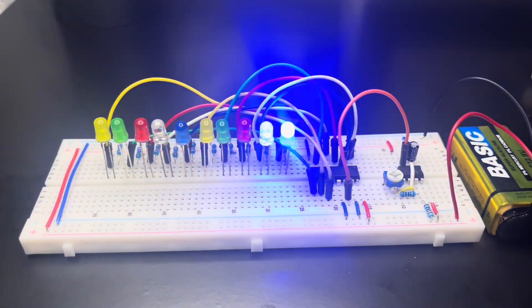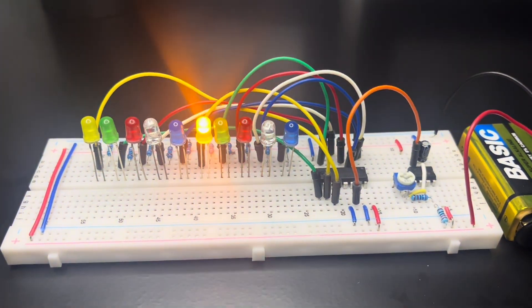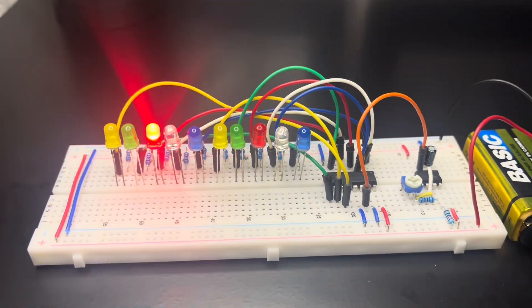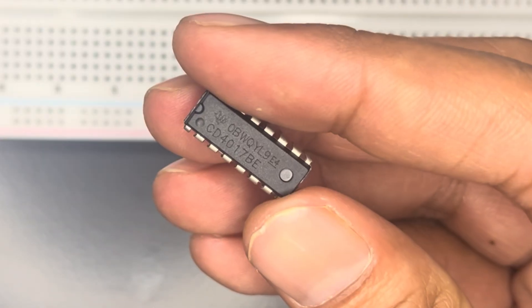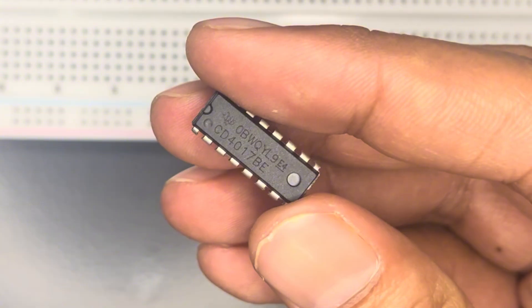Hello everyone, welcome back to my channel. In today's video I am going to show you how to make a LED chaser using a 555 timer IC and a CD4017 decade counter IC.